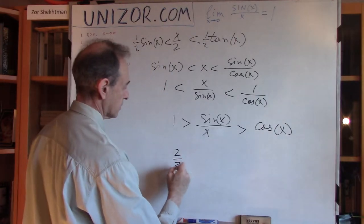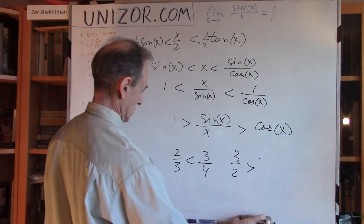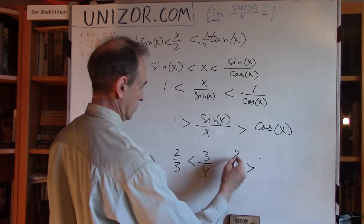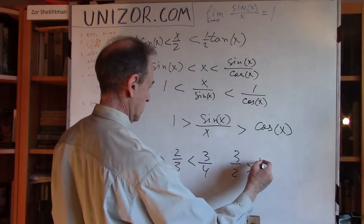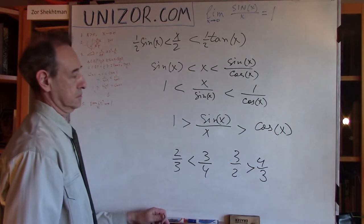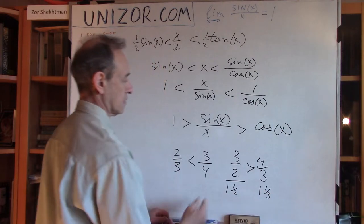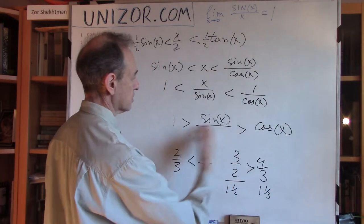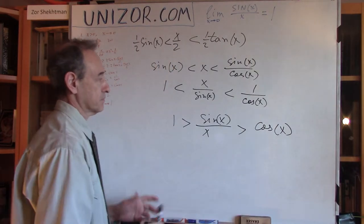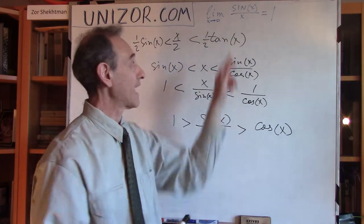If 2 thirds is less than 3 quarters, then 3 seconds is greater than 4 thirds. This is 1 and 1 half, and this is 1 and 1 third. This is greater than this. So this is a very easy kind of property between the inequalities. And that's actually enough for me, because now let's just think about it. I'm going to prove this particular thing when x is going to 0. Now, let's think about what happens with all these 3 when x goes to 0.